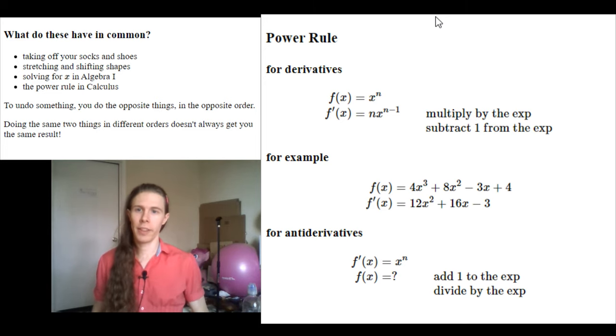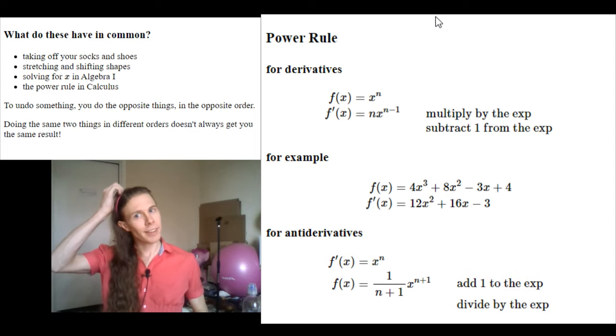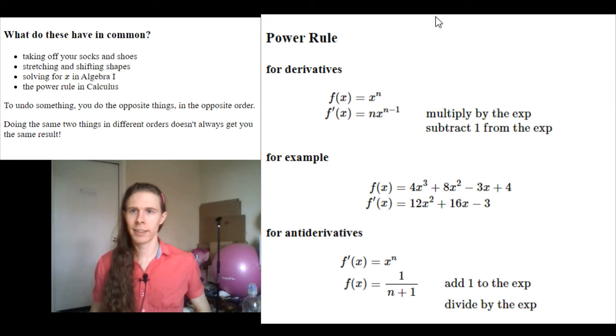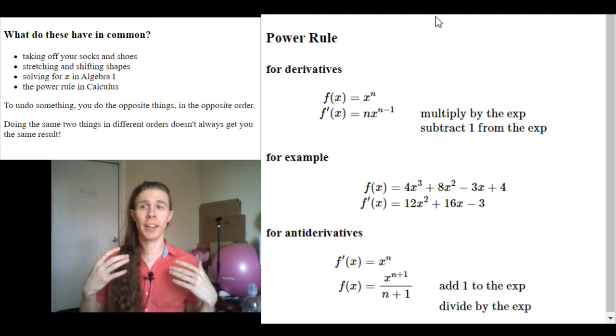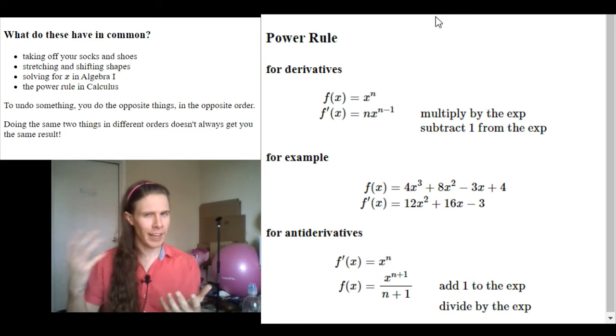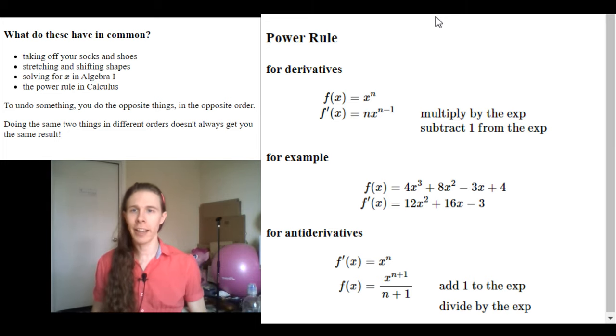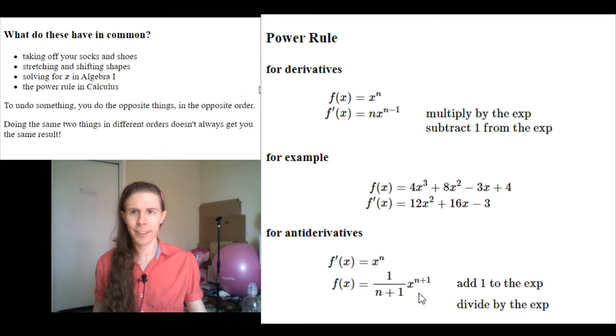And so that means starting with x to the n, we replace n with n plus 1 to add 1 to that exponent. Then we divide by the exponent that we have. So we get 1 over that. Now, in case you're concerned about me not writing this, just know that any time you're dividing by a number, that's the same as multiplying by the fraction. Just like how if you divide by 2, you get half of what you started with. So dividing by 2 and multiplying by half are the same thing. If I divide by n plus 1, that's the same as multiplying by 1 over n plus 1.